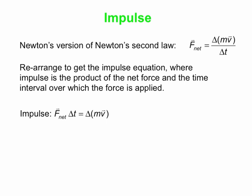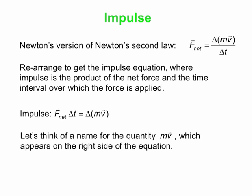Once again, this is really not a new idea. It's completely consistent with Newton's second law. We've just gotten it by rewriting Newton's second law a little bit. It sounds new, but it's actually not. Impulse F net delta t is delta mv.